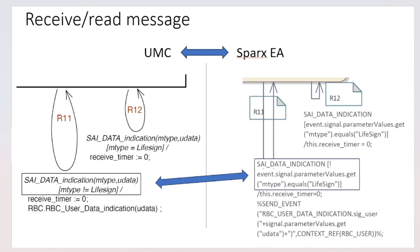Concerning receiving a signal and reading its parameter values, in UMC this is done by using the parameter name directly. In the condition shown in the box, we check whether the parameter mdip is not equal to life sign. In SPARX EA, Java source code is required to access the variable storing the parameter value — derived from the compiled code by locating where the parameter was stored. This shows that SPARX EA state machines are semi-formal, mixing UML constructs with source code.